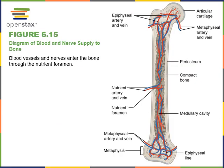Here we can see an illustration of the blood supply to a bone. The nutrient artery carries blood into the diaphysis and branches throughout the medullary cavity, and the nutrient vein carries blood out of the diaphysis. There are also metaphyseal arteries that carry blood into the metaphysis and branch up through the epiphysis as epiphyseal arteries, and metaphyseal veins carry blood out through the metaphysis.